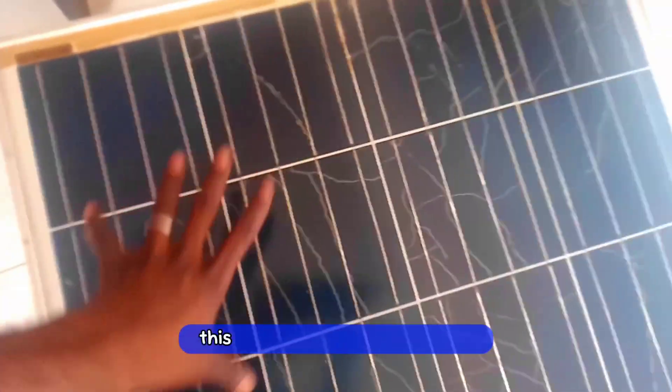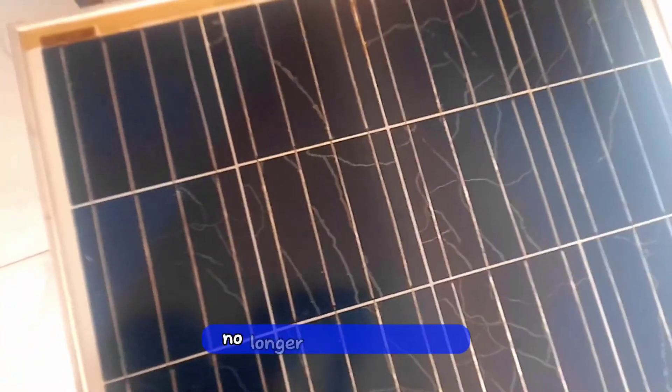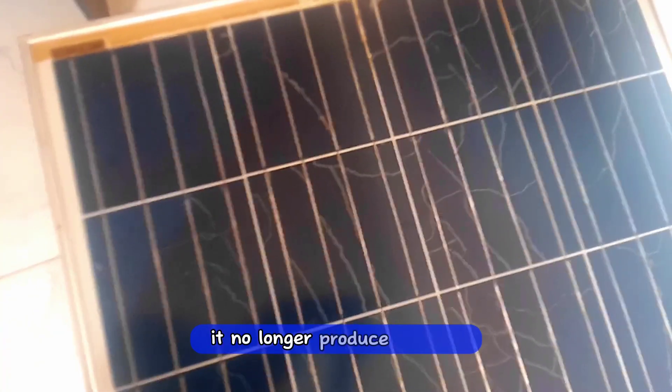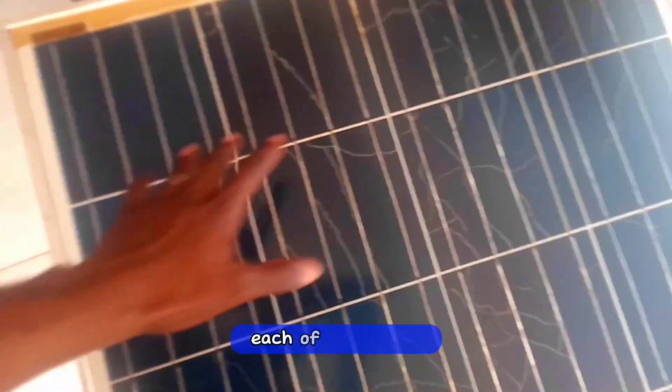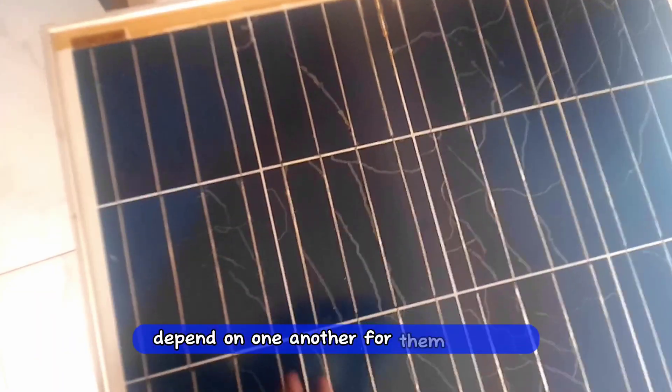And due to these burns, this solar panel no longer works. It no longer produces voltage, it no longer produces current. It's completely damaged because each of these cells depend on one another for them to work.